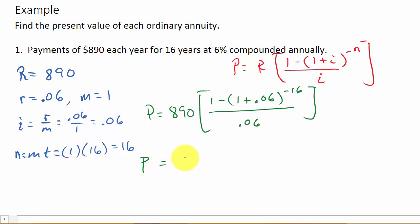Alright, so now comes the fun part, plugging this into our calculator. So this one is pretty easy to punch in. Let's start and do this part here inside the parentheses. So if we punch this in, we're going to do 1 minus, then parentheses, open a parentheses, 1 plus 0.06.